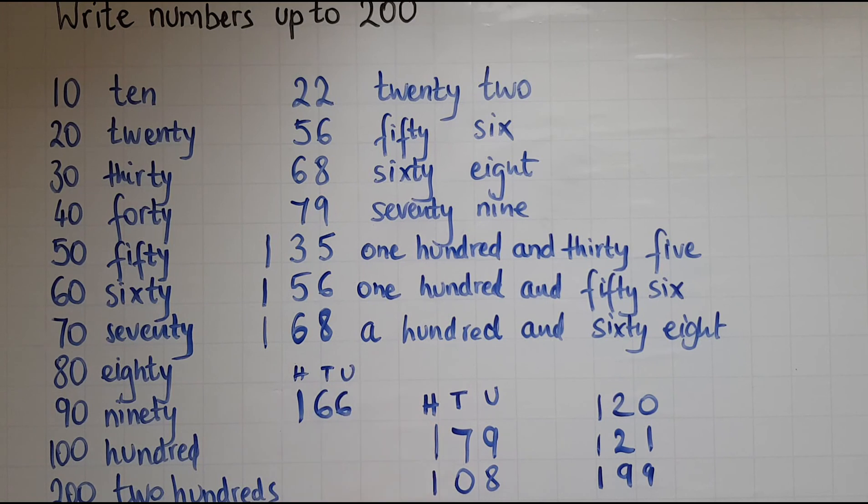So hundreds, tens and units. This is how you write numbers up to 200 in digits and in words.